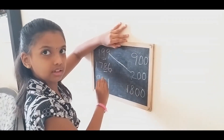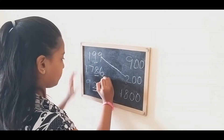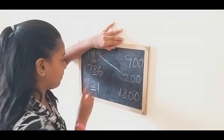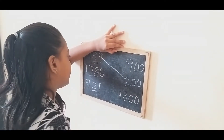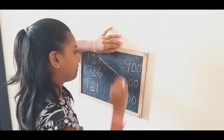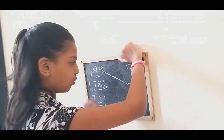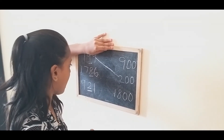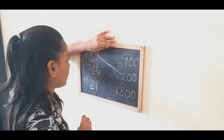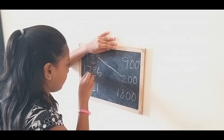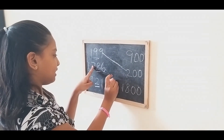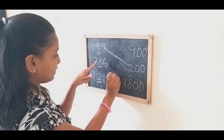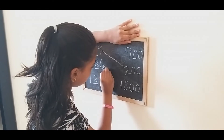For one thousand seven hundred eighty-six, never mind the ones place. The tens digit is 8, which is five up to nine, so we put zero in the ones place and the tens place and add one to the hundreds place, keeping the other numbers the same. So the answer is one thousand eight hundred.